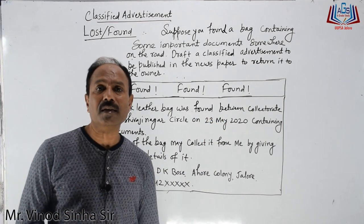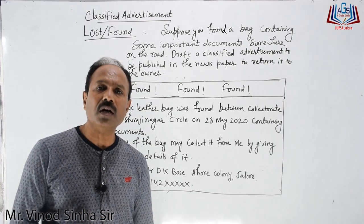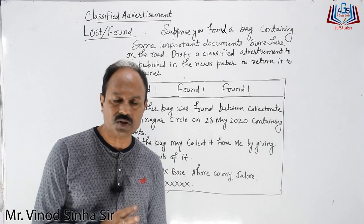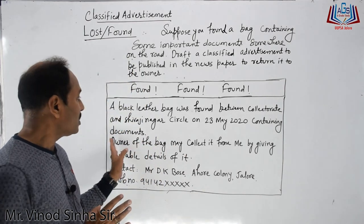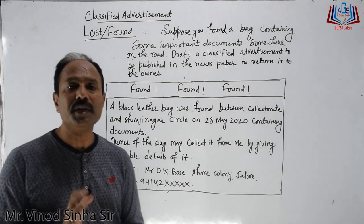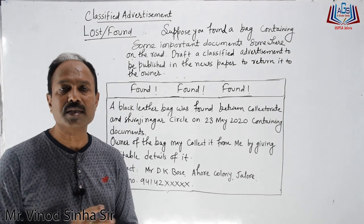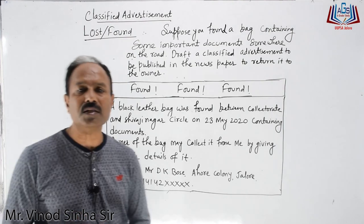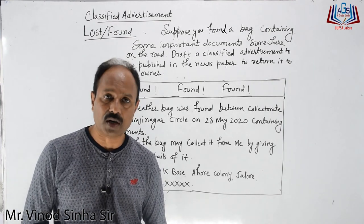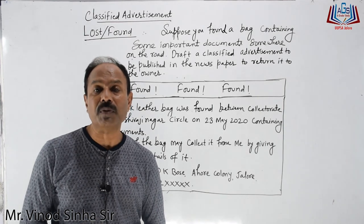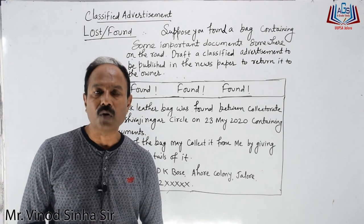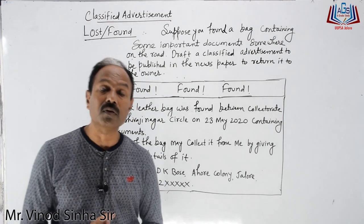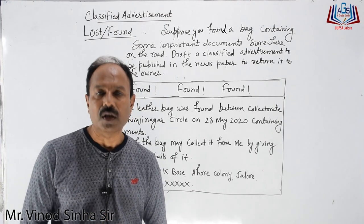If you look at this advertisement, it is an alert. One person has found something, and the finder is drafting the ad. Notice there is no detail given in it — no mention of whether it is a car document, a driving license, or anything else. Why? Because if someone wants to claim the item, how do you identify whether the person coming to collect it is the right one — the actual owner of that item?